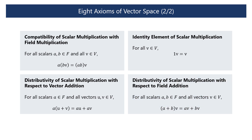Axiom 5 — Compatibility of scalar multiplication with field multiplication: For any scalars a and b in the field F and any vector v in the vector space V, multiplying v by b and then by a is the same as multiplying v by the product of a and b. Axiom 6 — Identity element of scalar multiplication: For every vector v in the vector space V, multiplying v by 1, where 1 is the multiplicative identity in the field F, results in v itself.